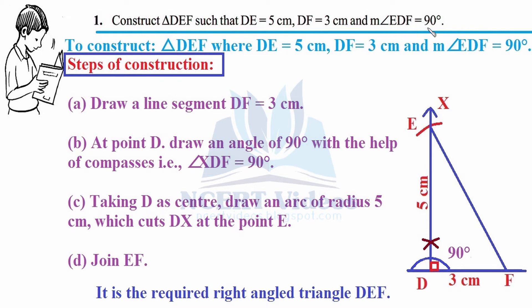With angle EDF equals 90 degrees, in this exercise we apply the side-angle-side criteria — the angle must be between the two given sides. Check this in the given question: DE and DF share vertex D, so the angle must be at D. Otherwise you cannot construct the triangle. That is all about side-angle-side studied in sixth standard.